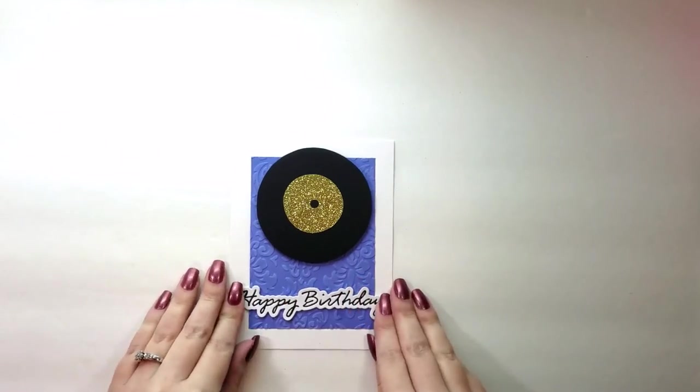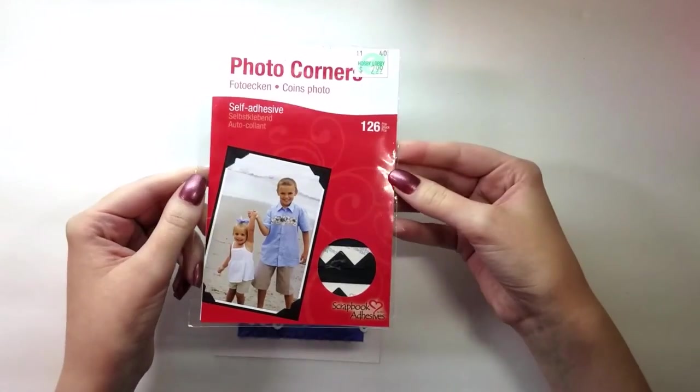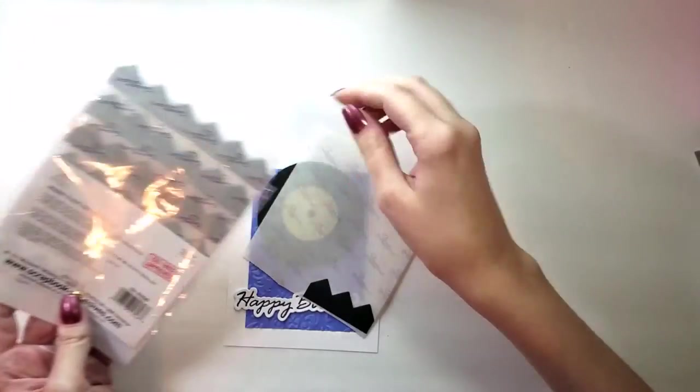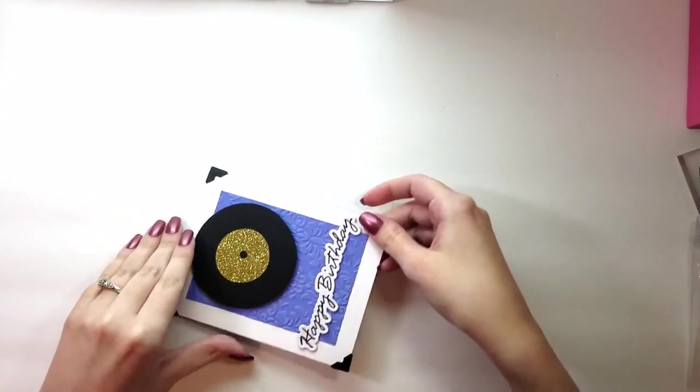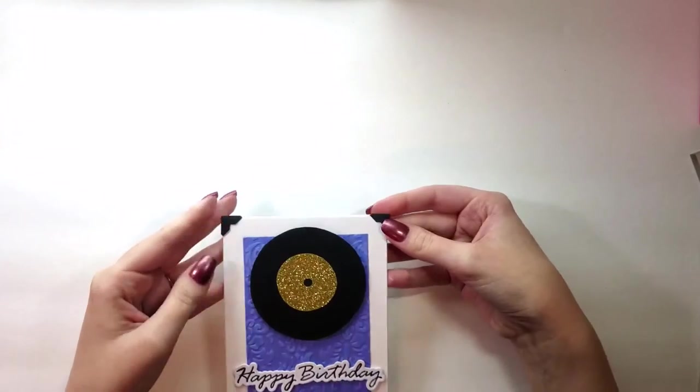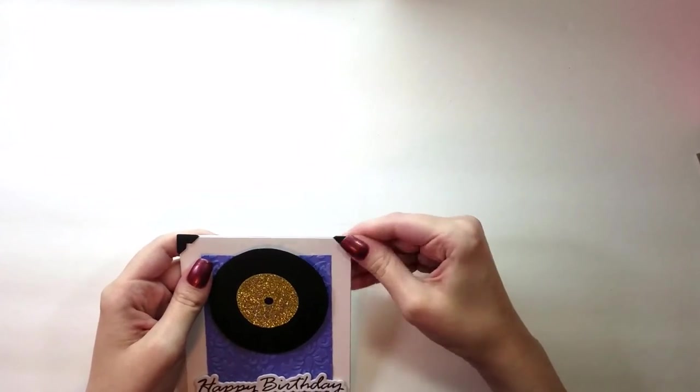I'm going to use some photo corners. These are very easy to find at your craft store. And I'm going to frame the card with these photo corners. This is a top folding card, as you can see. And this is what it looks like with the photo corners in place.